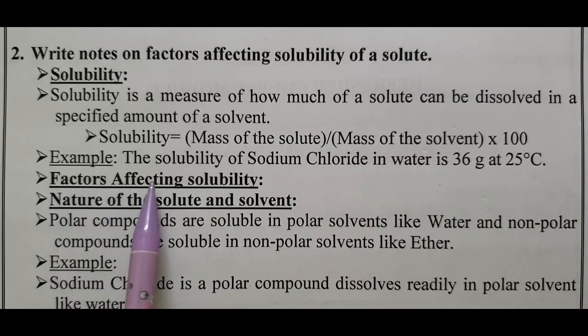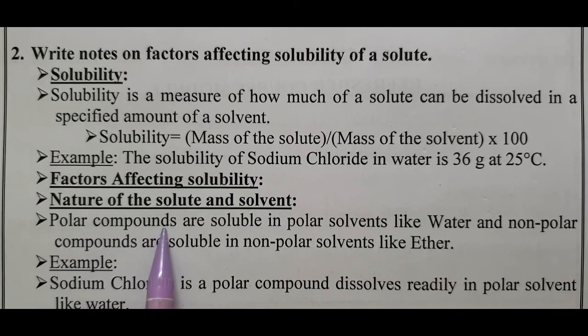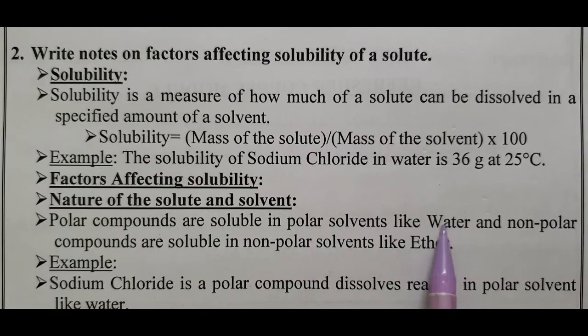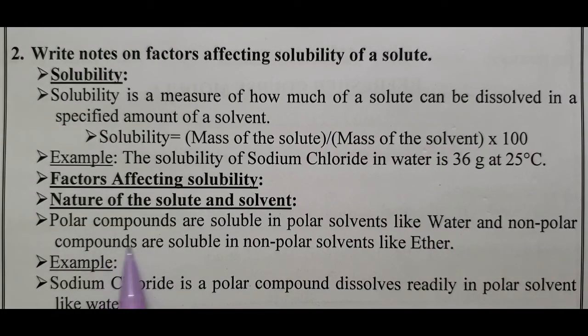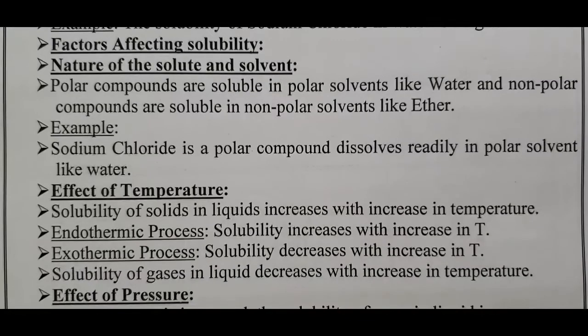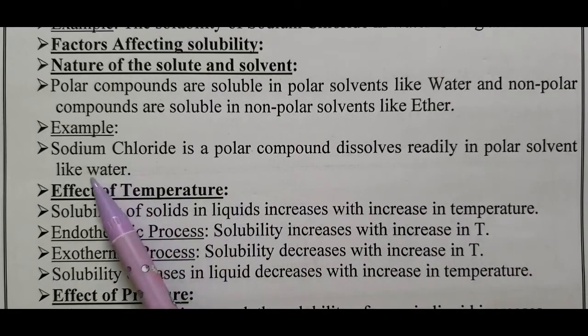What are the factors affecting solubility? First one is nature of solute and solvent. Polar compounds, the compounds in which containing plus and minus charges, are soluble in polar solvents like water. Water is a polar solvent, universal solvent. And non-polar compounds are soluble in non-polar solvents like ether, acetone, benzene, chloroform, etc. For example, sodium chloride Na+ Cl- is a polar compound dissolved readily in polar solvent like water.